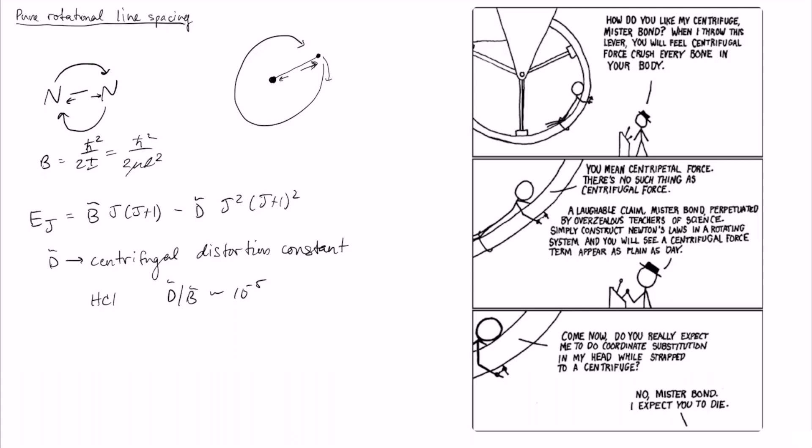So for low lying states, that means that this term on the right-hand side is around 100,000 times weaker than this, and so it's not going to play a large effect until you start to get into pretty large values of J.